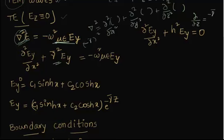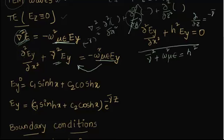Since d/dy is zero in all further derivations, the existing terms give us d²E_Y/dx² plus gamma-bar squared E_Y equal to minus omega-squared epsilon E_Y. Bringing terms to the left-hand side, we use the important relation gamma-bar squared plus omega-squared mu epsilon written as H-squared. This gives the equation d²E_Y/dx² plus H-squared E_Y equal to zero.